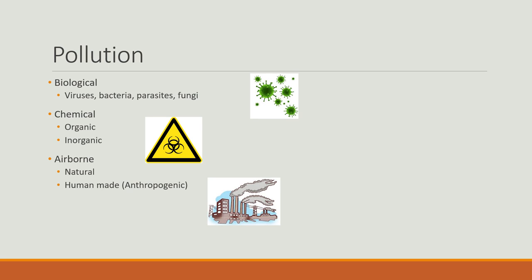There is biological pollution, such as viruses, bacteria, parasites, and fungi. There is chemical pollution, which can be broken into organic, such as crude oil, solvents, hydrocarbons, pesticides, plastics, and detergents. There is also inorganic chemical pollution, such as metals and their salts from mining, ammonia, sulfur from car emissions, and inorganic fertilizers.